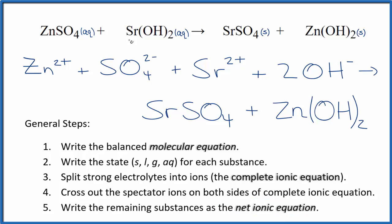So this is the net ionic equation for zinc sulfate plus strontium hydroxide. This is one of those interesting cases where we have two precipitates forming when these substances react.